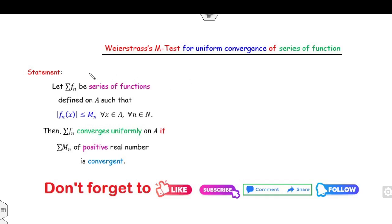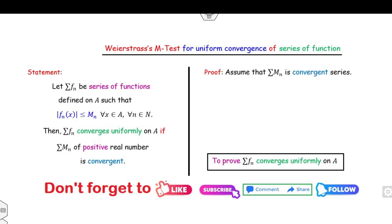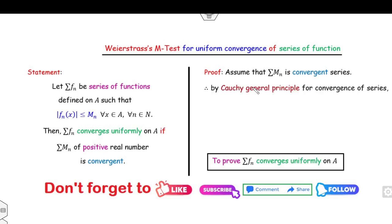The proof is very simple — I will prove this result within five minutes. What is given: the series M_n is convergent. The target is to prove that the series f_n is uniformly convergent. Since the limit is not specified, we apply the Cauchy criteria for uniform convergence. Given epsilon greater than zero, there exists a positive integer m such that the Cauchy condition holds.